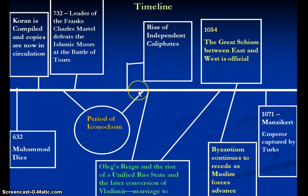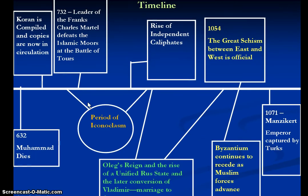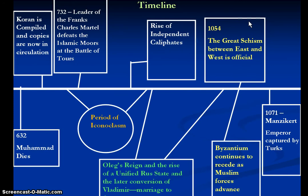Near the end of the iconoclasm period in the Byzantine Empire, you see with Islam the rise of independent caliphates. The caliphate — the singular version — refers to the leaders in the Islamic faith. After the death of Muhammad, there is great debate amongst the Islamic empires about who is supposed to be the leader of this religion, ultimately resulting in several different dynasties, which we will talk about in later presentations. Right after that, we see Oleg's reign and the rise of a unified Russian state and the later conversion of Vladimir with his political marriage to the Byzantine princess Anna. And by about 1054, we get the official Great Schism between the East and the West, where we see different religions develop in the Christian world — Greek Orthodox in the East and Roman Catholic in the West.